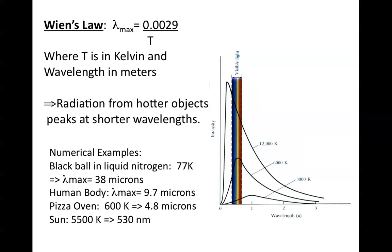The sun, which is about 5,500 degrees above absolute zero, has its peak in the yellow at about 530 nanometers.